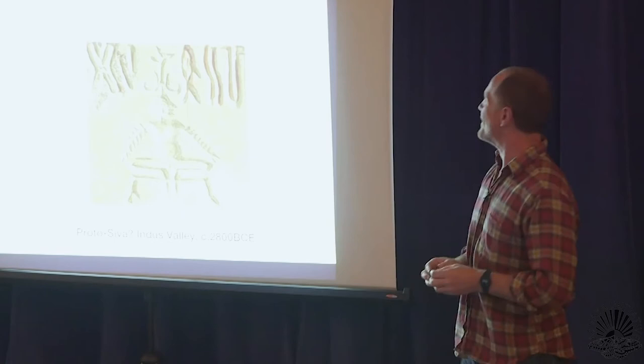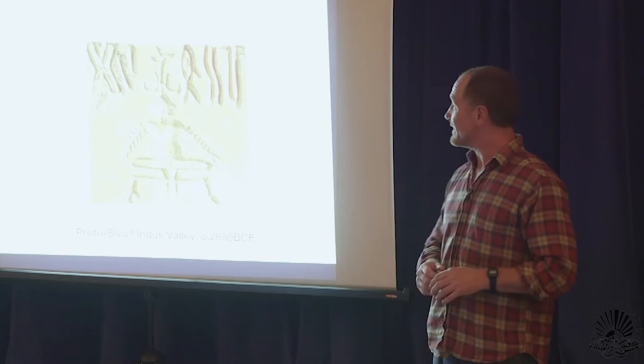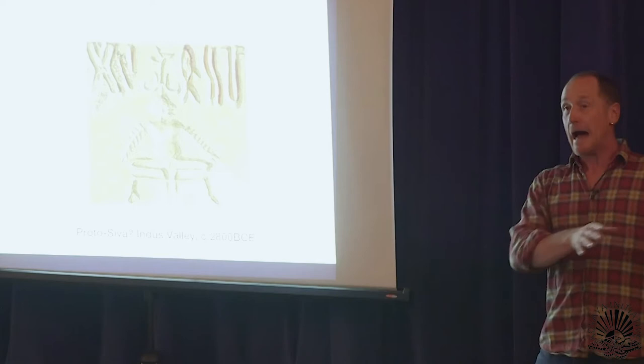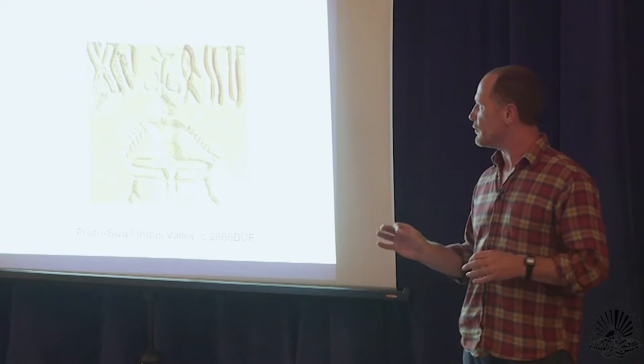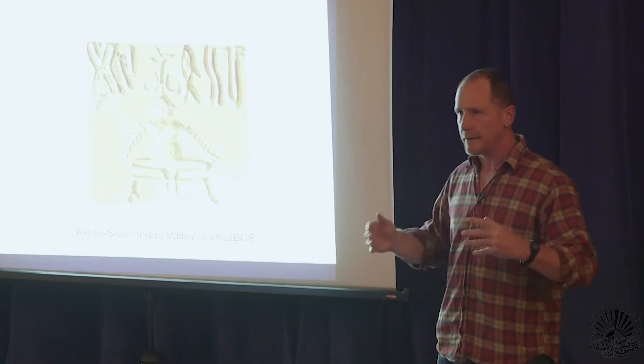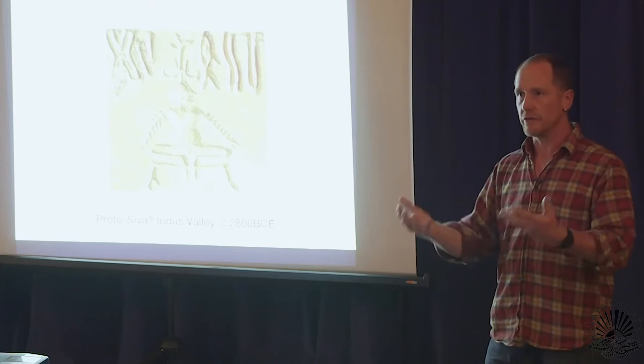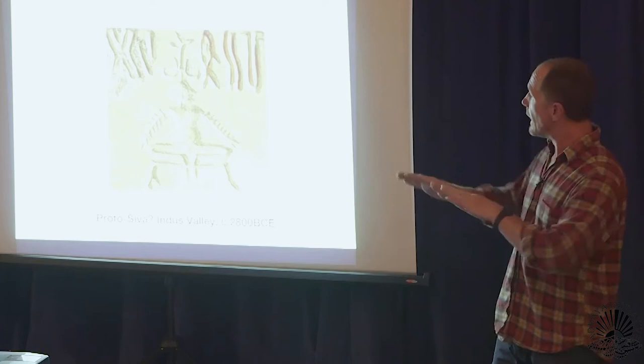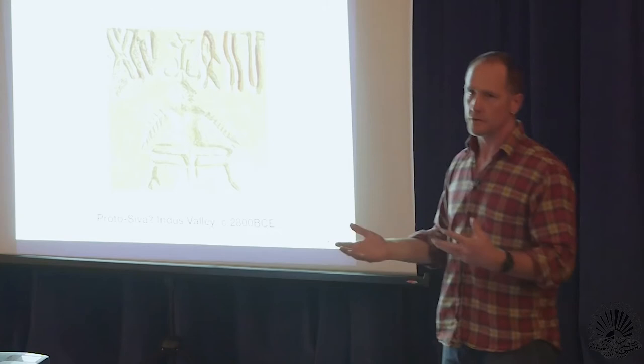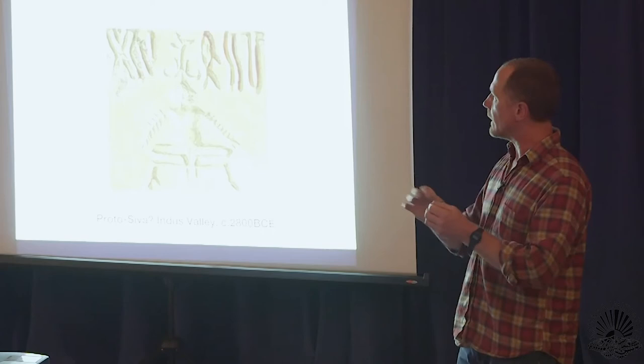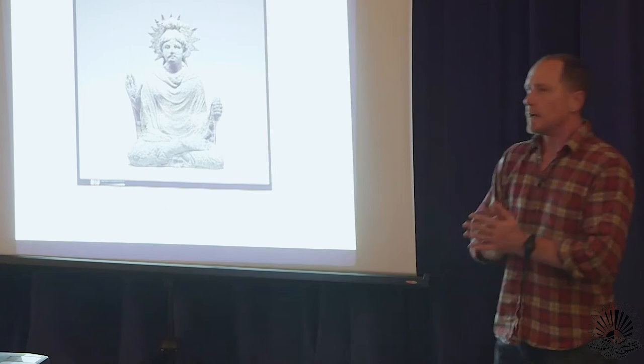This is where the crossovers start. This is the seal that Jim was talking about from the Indus Valley. We can't really take this as evidence of yoga practice, or as an asana of yoga, because evidence for a context in which such a seated yoga practice would happen is not there. Some people have argued that this is, in fact, a Eurasian tree god. It doesn't have anything to do with yoga or Shiva. To make that leap, I think, is a difficult leap anyway.